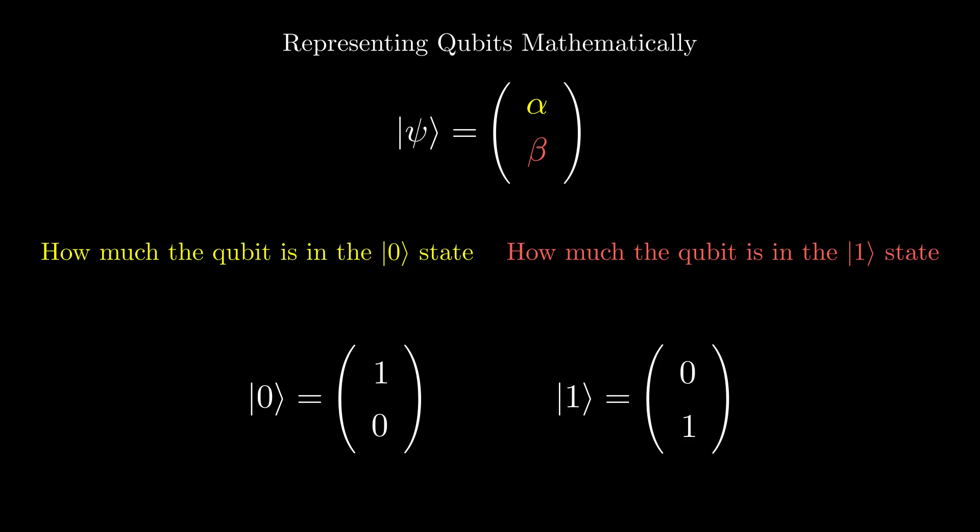So now we know how to represent a qubit mathematically. But how do we measure the qubits? For that, we must look at another rule of quantum mechanics. When we measure a quantum system, it changes the state of the system to the measurement. What does that mean?